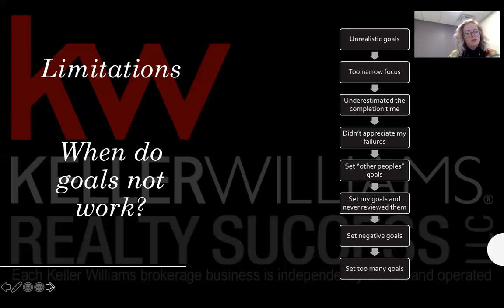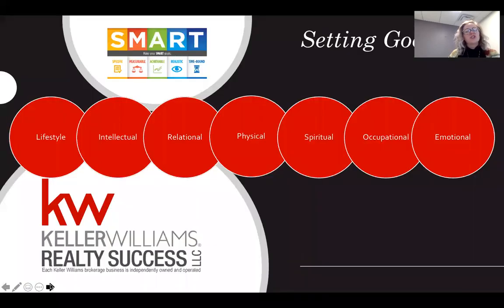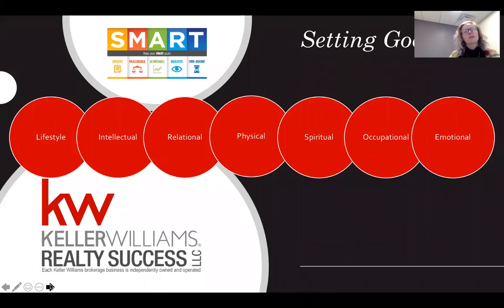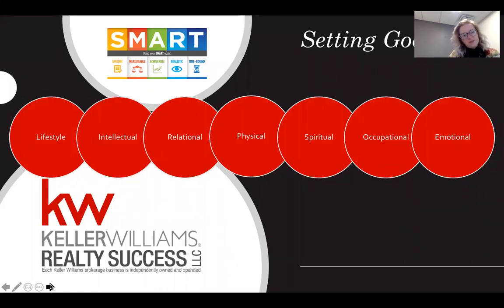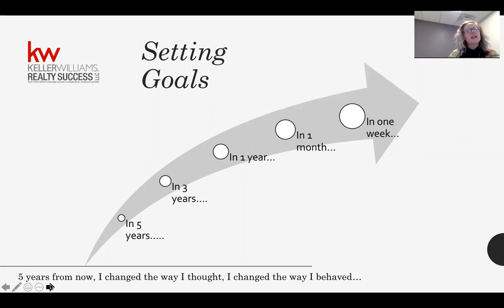Today I'm going to help you with what those seven goals are. We have seven categories: lifestyle, intellectually, relational, physical, spiritual, occupational, and emotional. When we set these goals we want to make sure they're specific — with great detail. They should be measurable with a starting and ending point, achievable, realistic, and time-stamped. Today we're going to vision out as far as five years from now, then work backwards to three years, one year, one month, one week, and 24 hours.